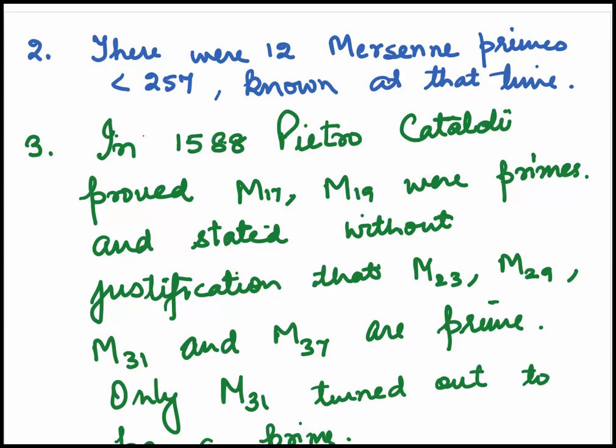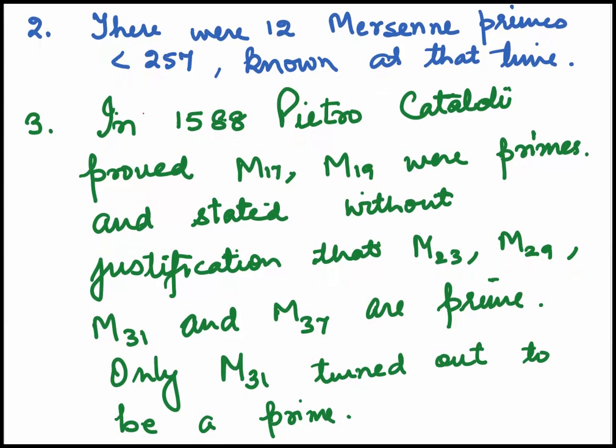Please keep in mind that at that time, all the calculations were done manually and which was not easy. In 1588, Pietro Antonio Cataldi, who used to distribute his work in Italy for free and was responsible for founding the first mathematical academy in Bologna, he proved that M17 and M19 were primes and stated without justification that M23, M29, M31, and M37 are also primes. Only M31 turned out to be a prime.